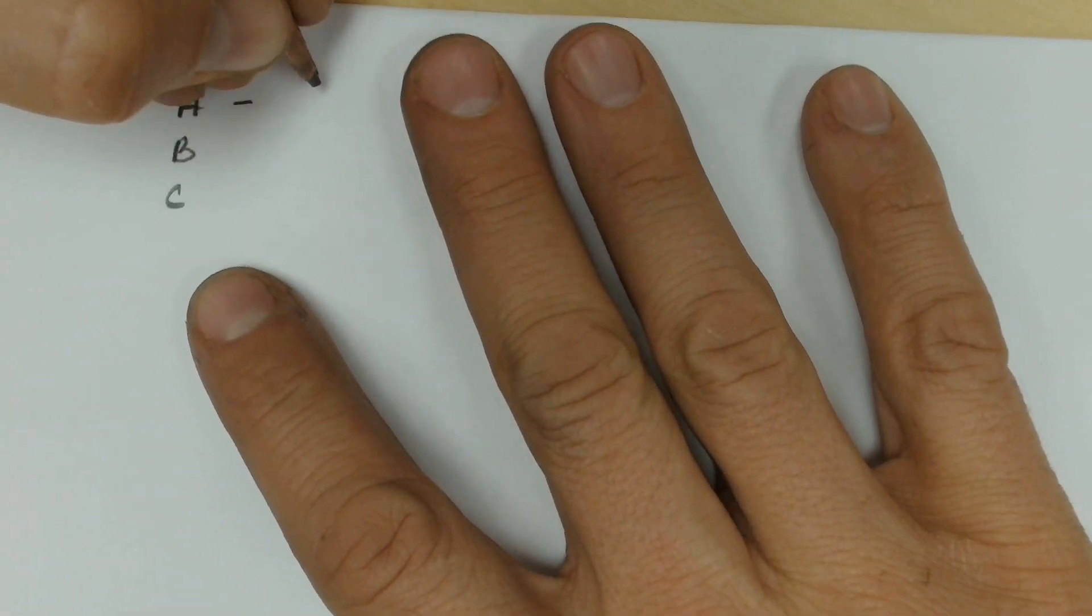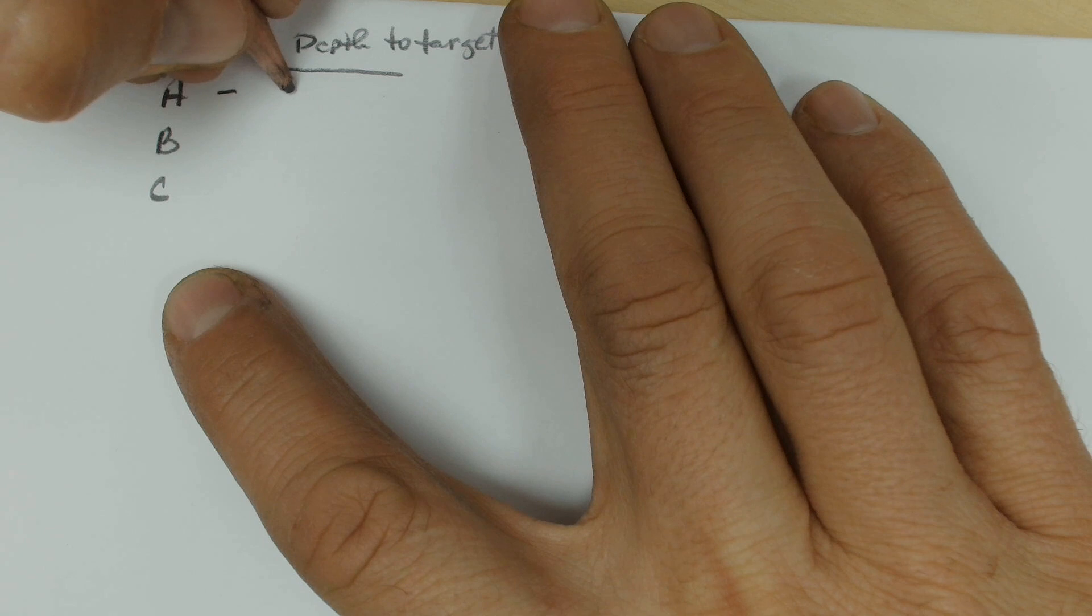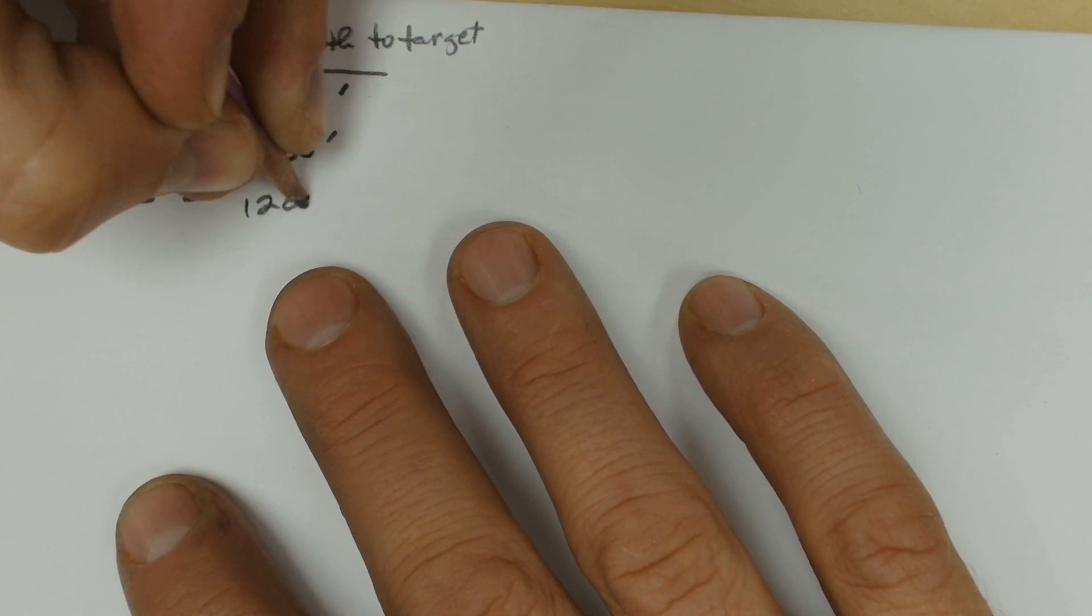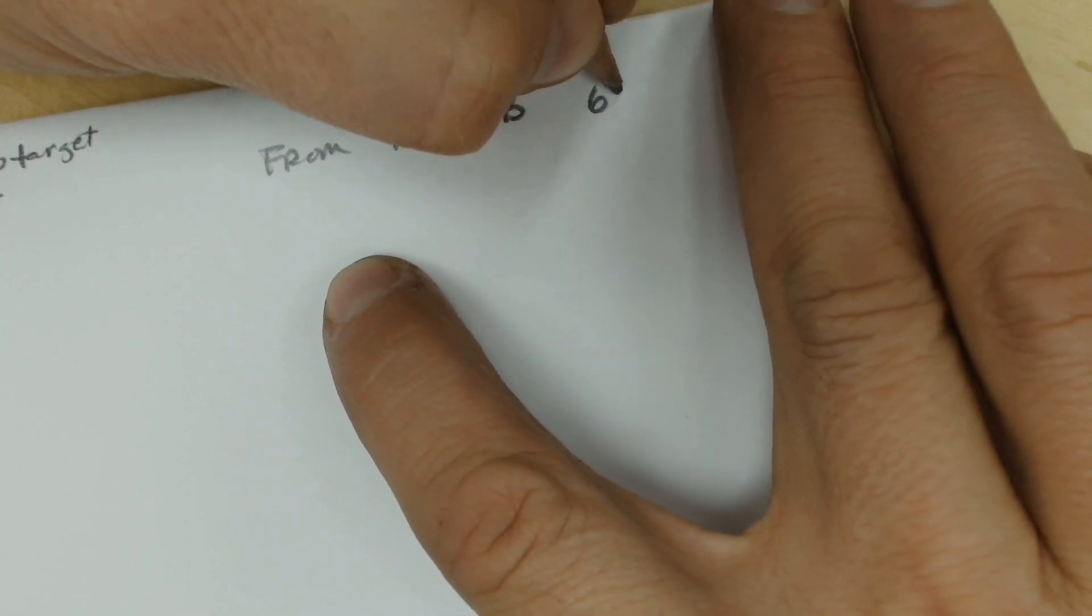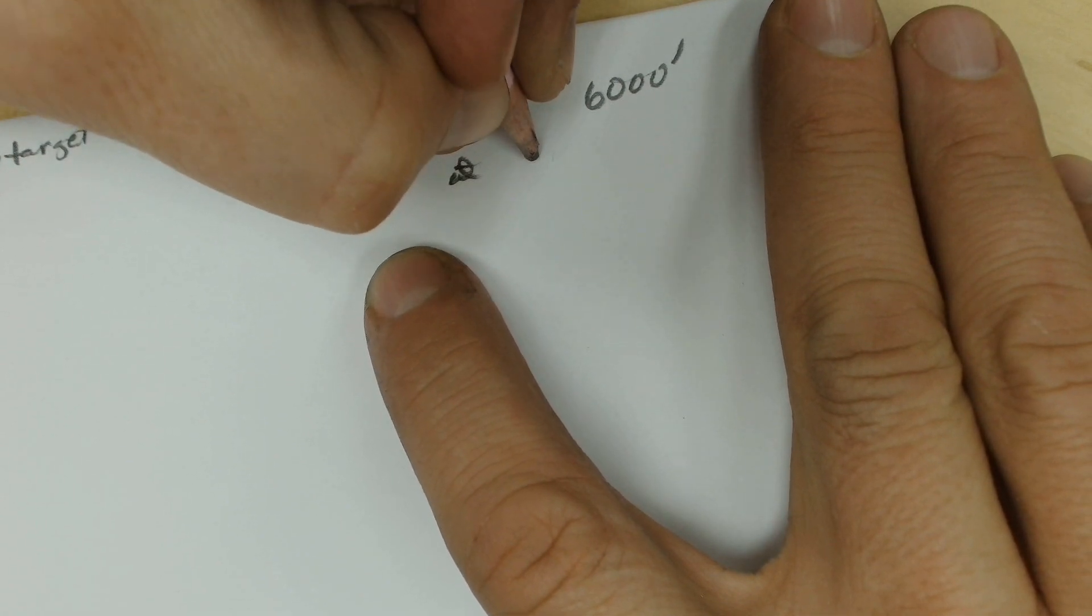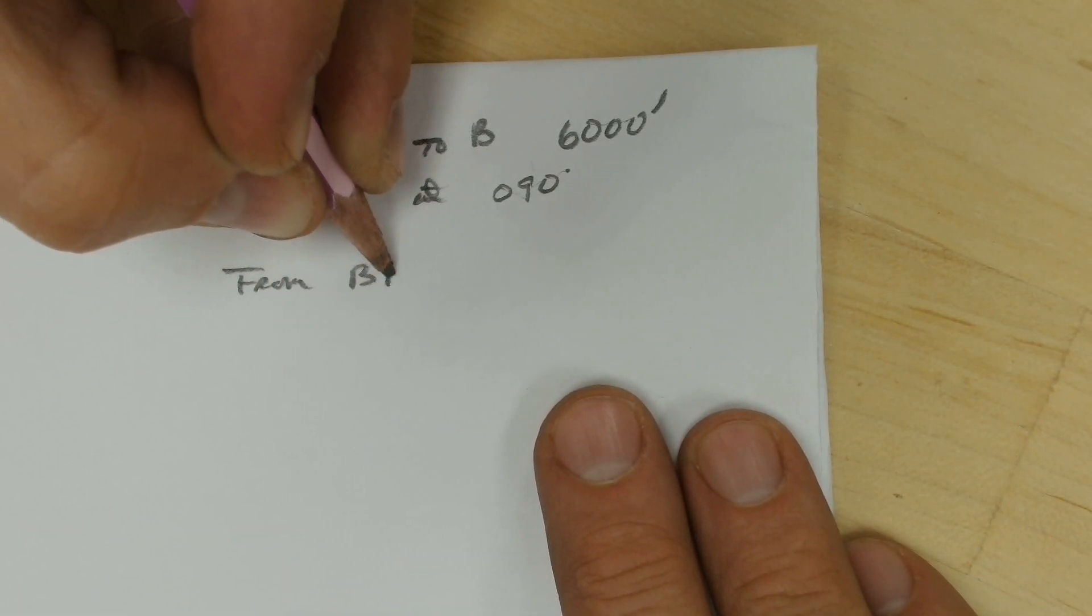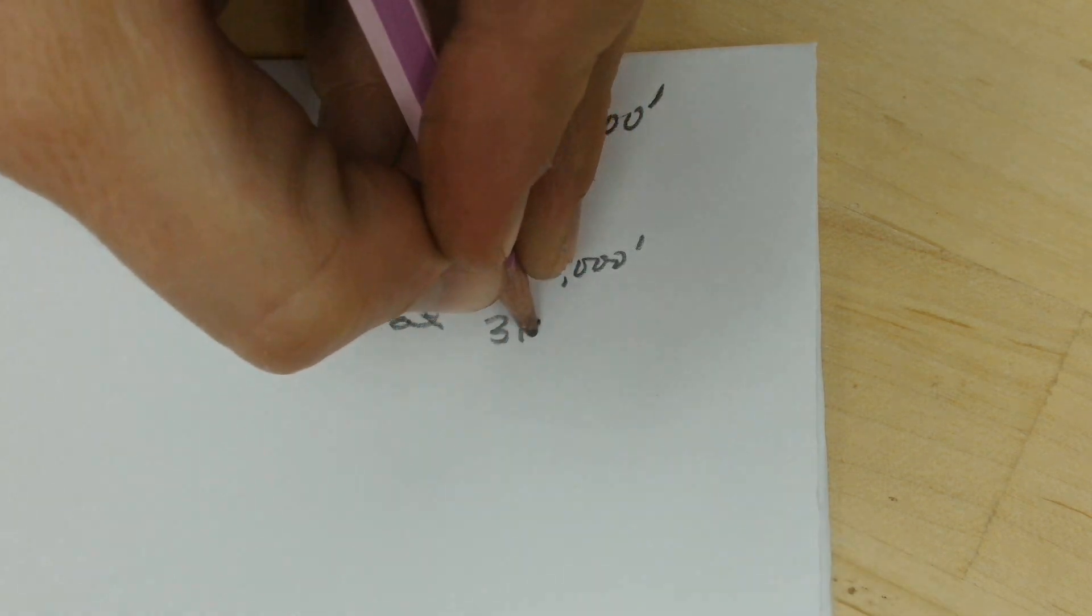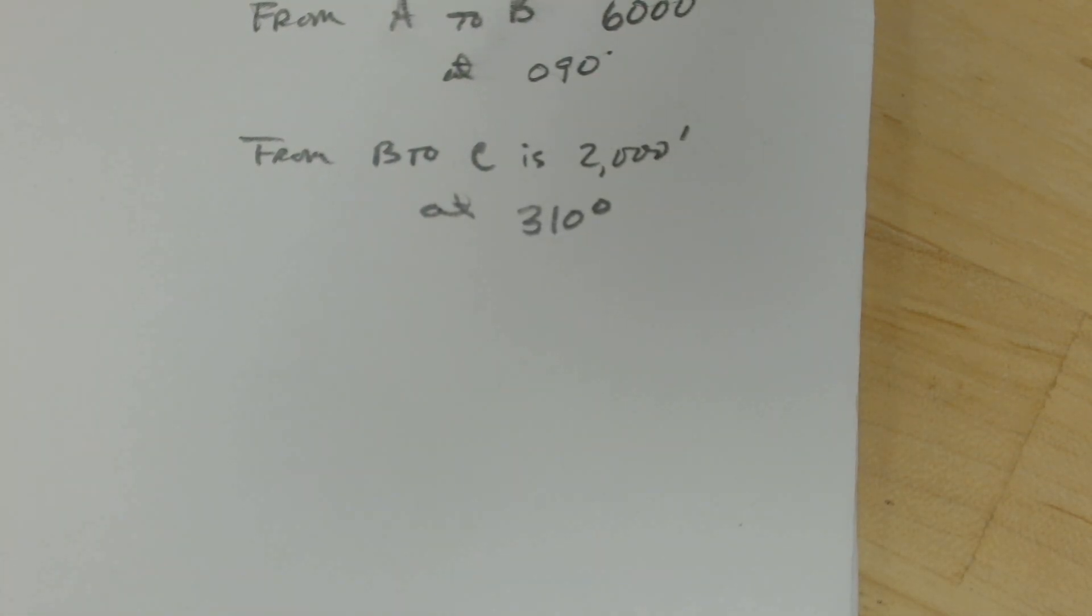Well A hits the target, depth to target, at 500 feet. B is at 1,000 feet, and C is at 1,200 feet. Those are the depths that we drilled. From A to B is 6,000 feet at a bearing of 090. And then from B to C is 2,000 feet at a bearing of 310. The first step is to draw this out to scale. I'm going to grab my ruler and my protractor.